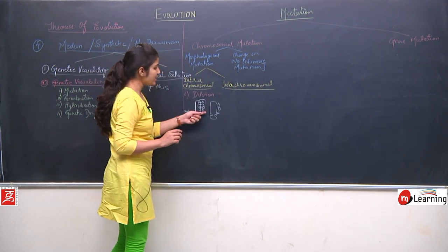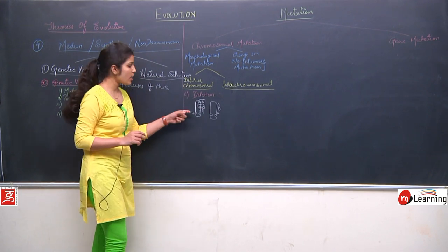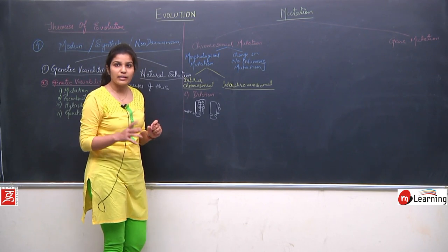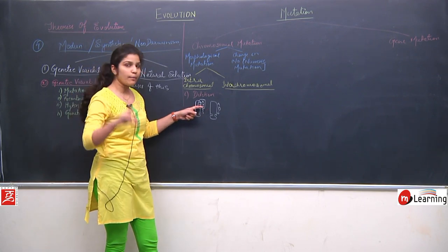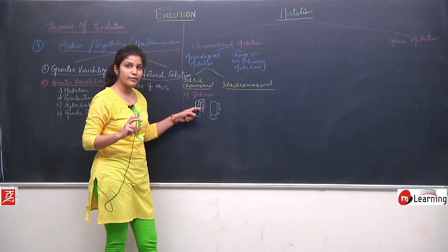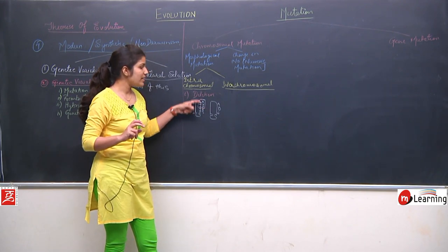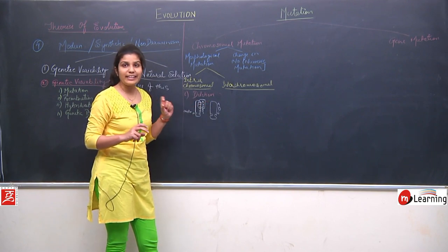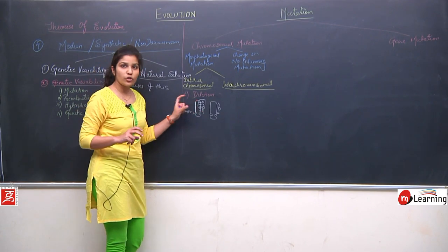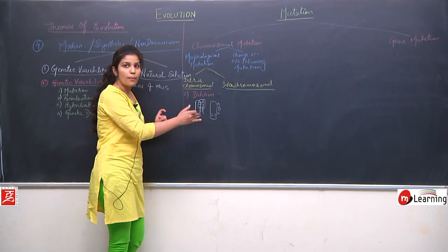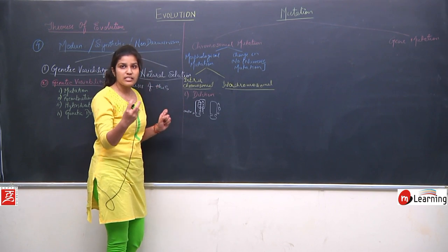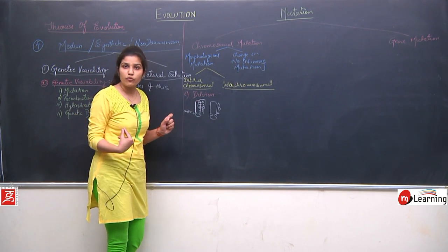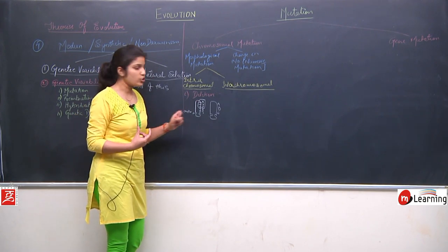Deletion can be of two types: terminal deletion and intercalary deletion. Terminal deletion is when the segment is deleted from the terminal or last part of the chromosome. Intercalary deletion is when the segment is deleted from the middle part of the chromosome — when any segment is removed from the middle.